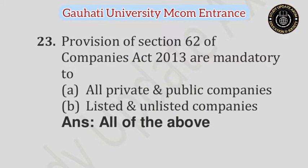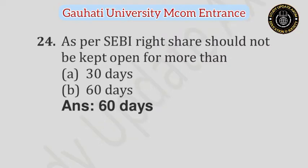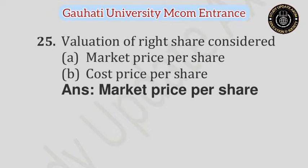Question number 23: Provision of Section 62 of Companies Act 2013 are mandatory to — Option A: All private and public companies, Option B: Listed and unlisted companies. Answer is All of the above. Question number 24: As per the SEBI, right share should not be kept open for more than — Option A: 30 days, Option B: 60 days. Answer is 60 days. Question number 25: Valuation of right share considers — Option A: Market price per share, Option B: Cost price per share. Answer is Market price per share.